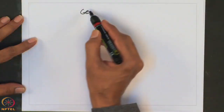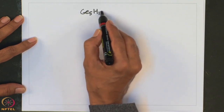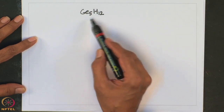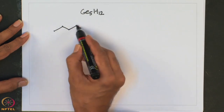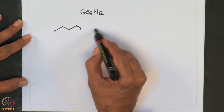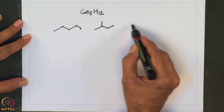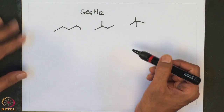Let us look into a simple question: consider the germanium-5 analog, germapentane. How many isomers of germapentane are possible? It is very similar to the organic compound pentane. Writing out the structures with 5 germanium atoms in a chain, one can draw the straight chain, a branched isomer, and another branched isomer — so essentially 3 isomers are possible, just as one can write 3 isomers for pentane.